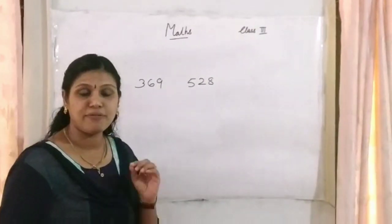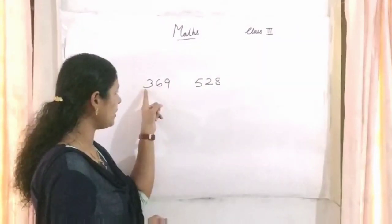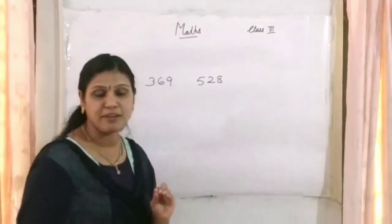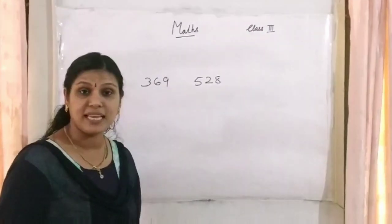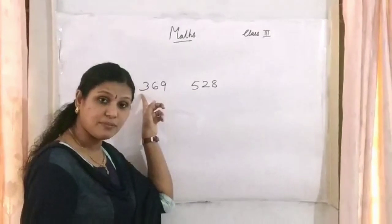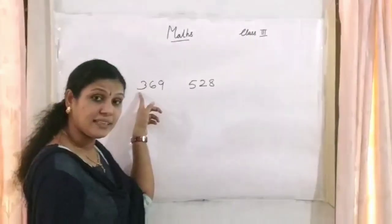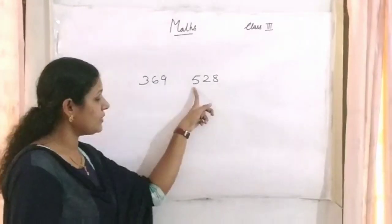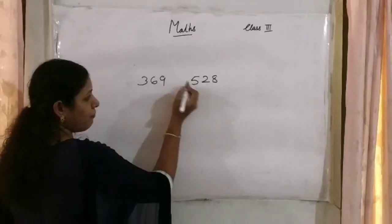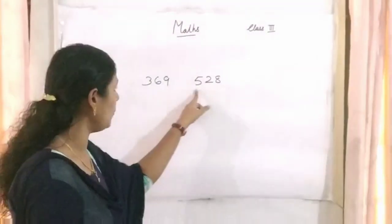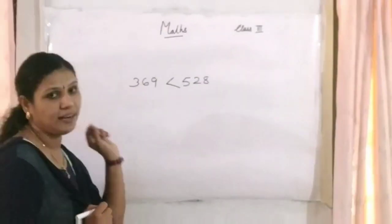For comparing two numbers, first we count the number of digits. Here: 1, 2, 3 — 3 digits. Here also: 1, 2, 3 — 3 digits. Both sides have the same number of digits. Next, we select the biggest place value, which is 100. At the 100s place, this number is 3 and here the number is 5. Comparing 3 and 5, which is greater? 5. So 528 is the bigger one, and we put the greater-than sign.